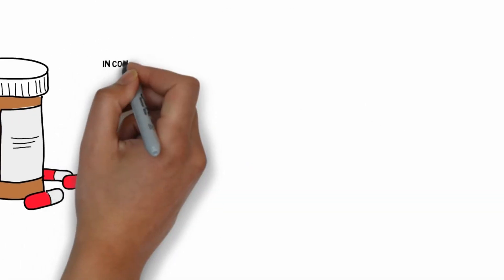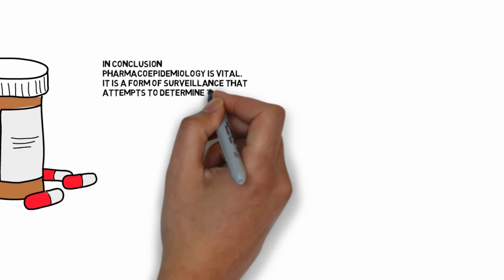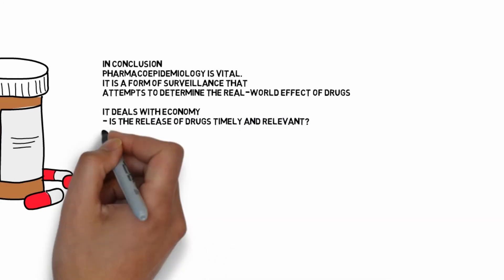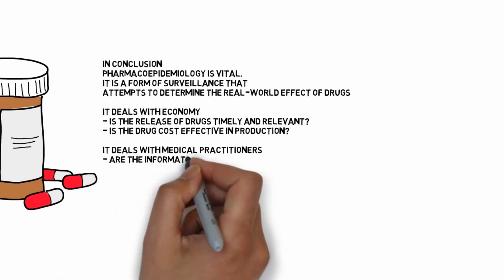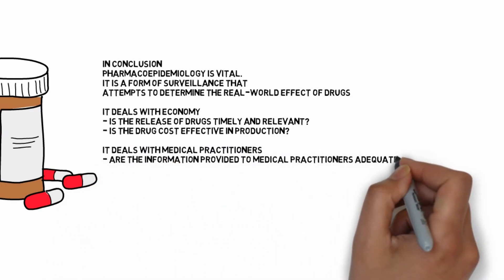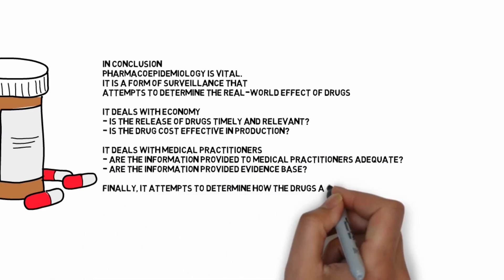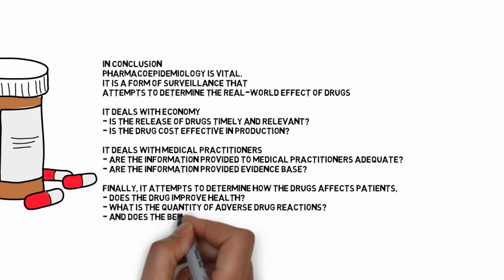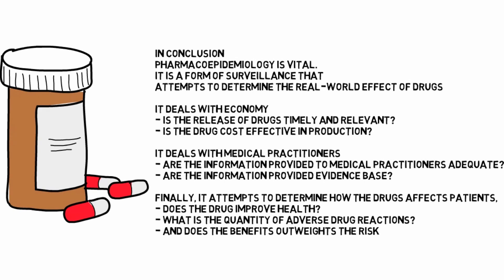In conclusion, Pharmacoepidemiology is vital. It is a form of surveillance that attempts to determine the real-world effects of drugs — how it affects the economy, whether the release of drugs is timely and relevant, and whether the drugs are cost-effective in production. Second, how the drugs affect medical practitioners: are the information provided to medical practitioners adequate, and are the information provided evidence-based? Finally, it attempts to determine how the drugs affect patients: does the drug improve health, what are the quantity of adverse drug reactions, and how the benefits outweigh the risks? Thank you for taking the time to watch my animated video.